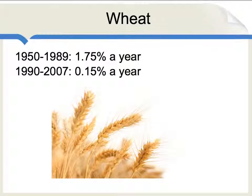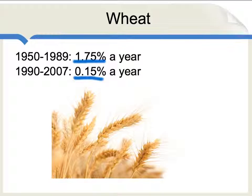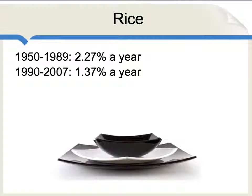Consider yields for wheat. In the immediate post-war era, yields for wheat grew on average 1.7% a year. Since 1990, they've almost stopped growing — on average it's gone up only 0.15% a year. There's also been a slowdown of gains in rice production, going from 2.27% a year down to 1.37% a year.